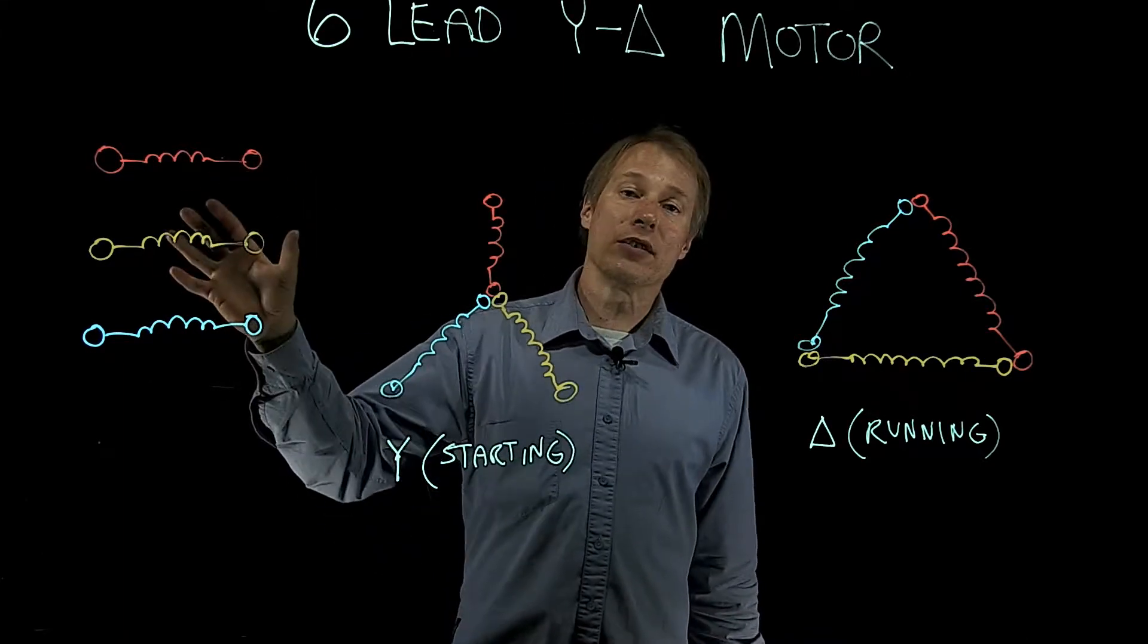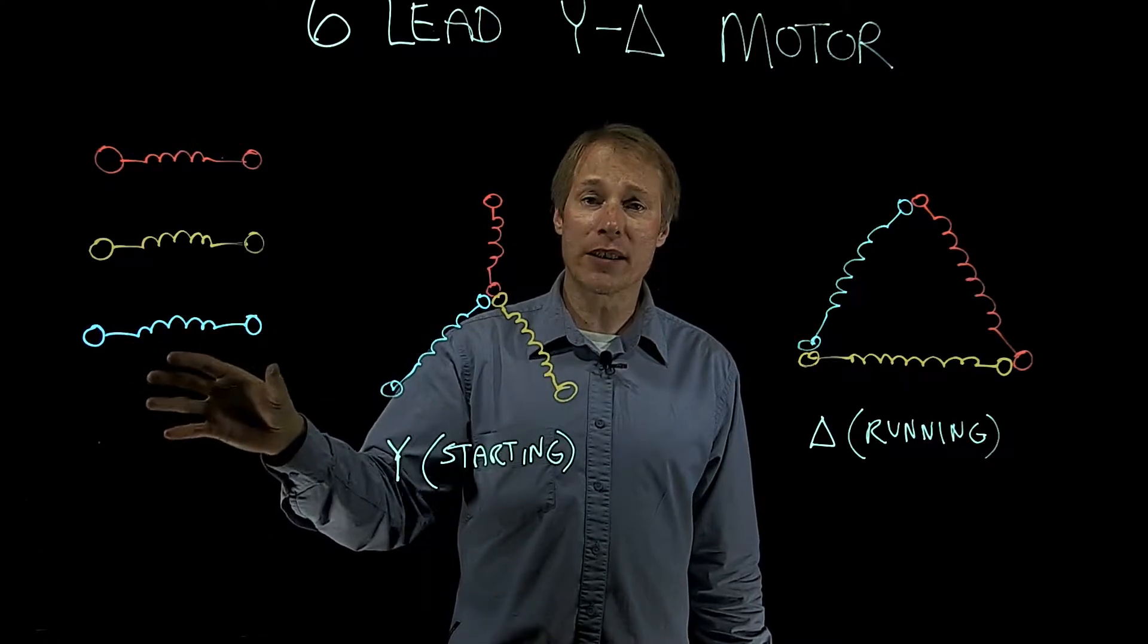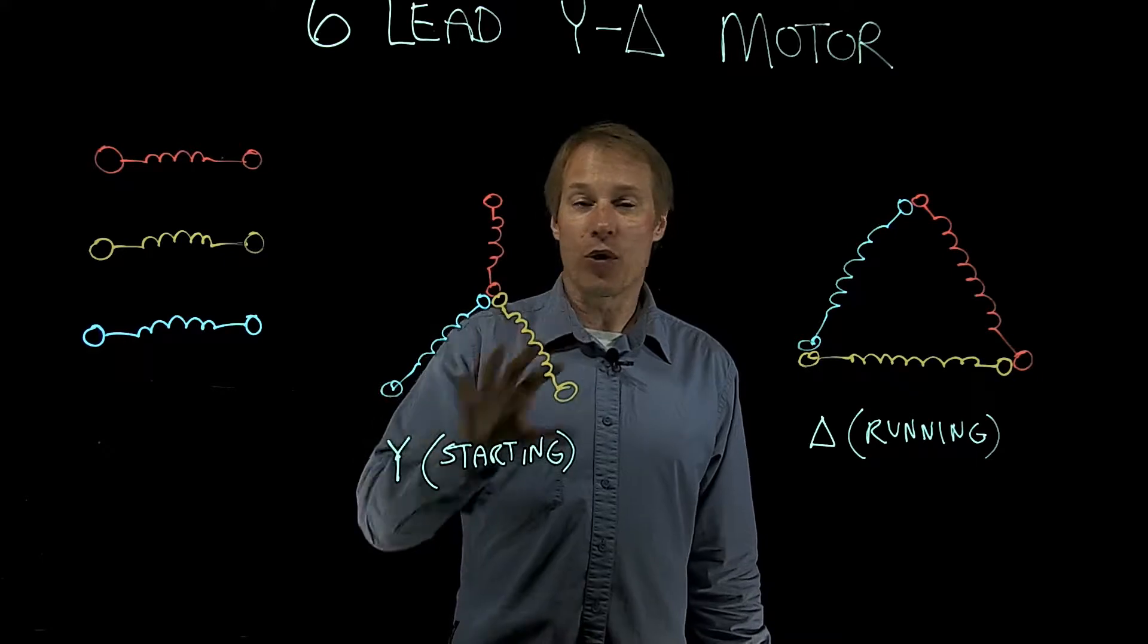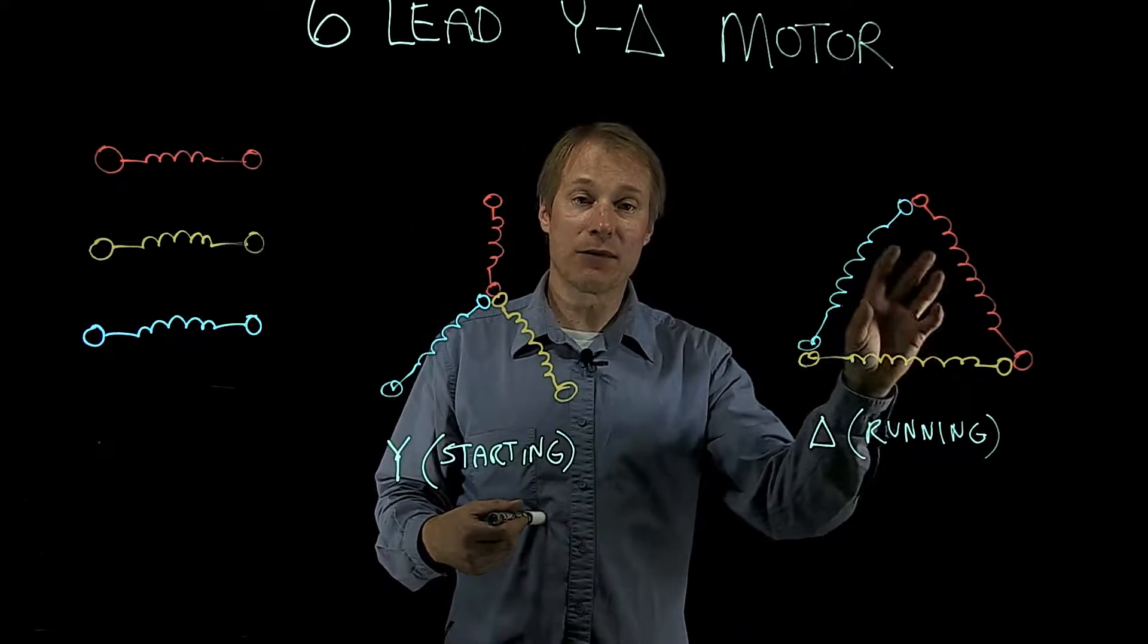So the Y-delta motor has three windings to it, and those windings can be connected into a Y connection for starting, and then moments later into a delta connection for running.